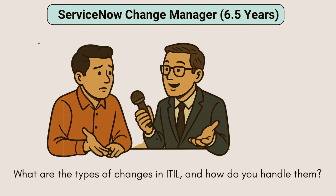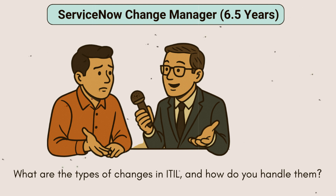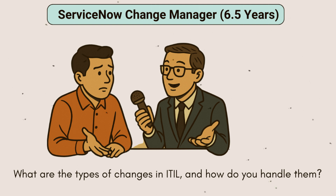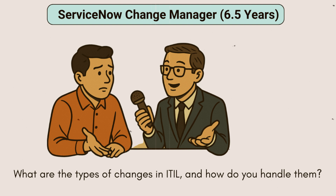Okay, good. What are the types of changes in ITIL and how do you handle them? Sure, sir. So basically, there are three types of main changes. First one is a standard change. Then we have normal change and emergency change. So standard change is a type of low risk — these are repeatable and pre-approved changes. For example, scheduled password reset or deploying a printer driver.